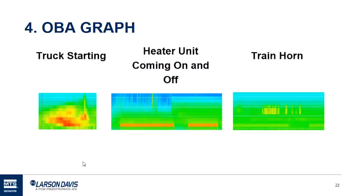Here are some OBA data I've recorded in my sound measurements: the first one is a truck starting, the second one shows the frequency the heater runs at when it goes on and off, and the last one is a distant train horn. When I see similar sound signatures throughout my measurements I can quickly identify them just by looking, which is faster than listening. I like to use this to identify events.